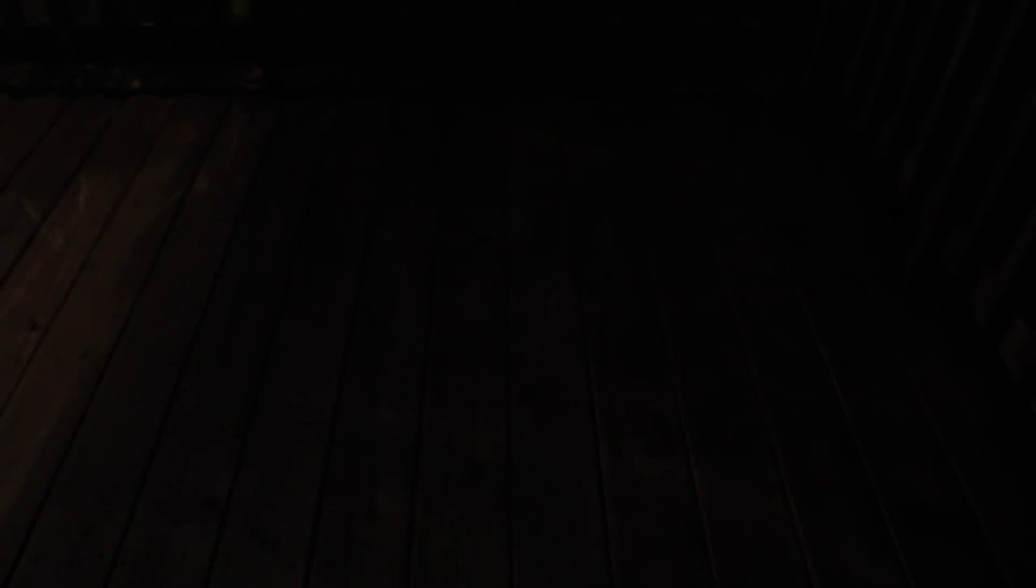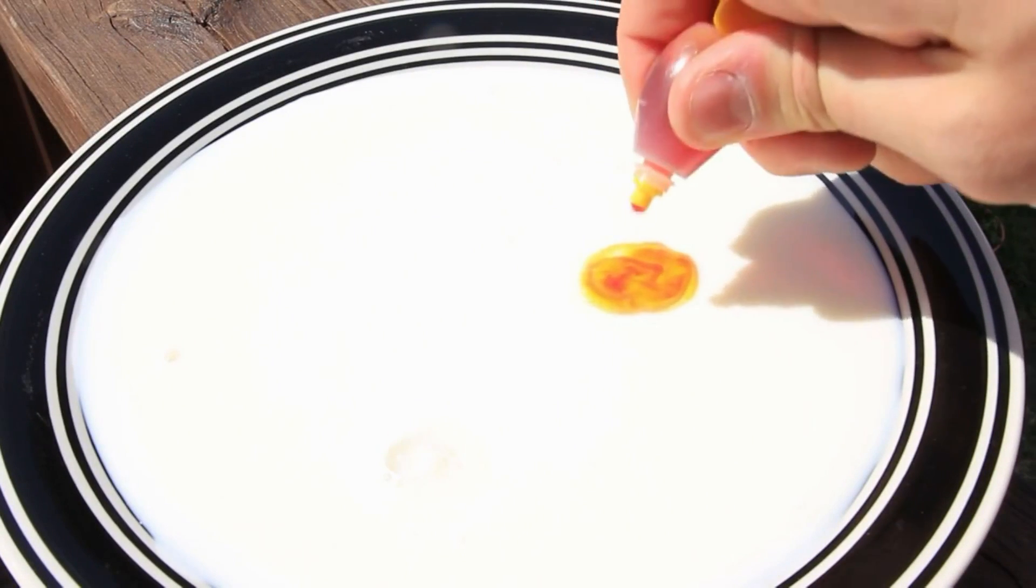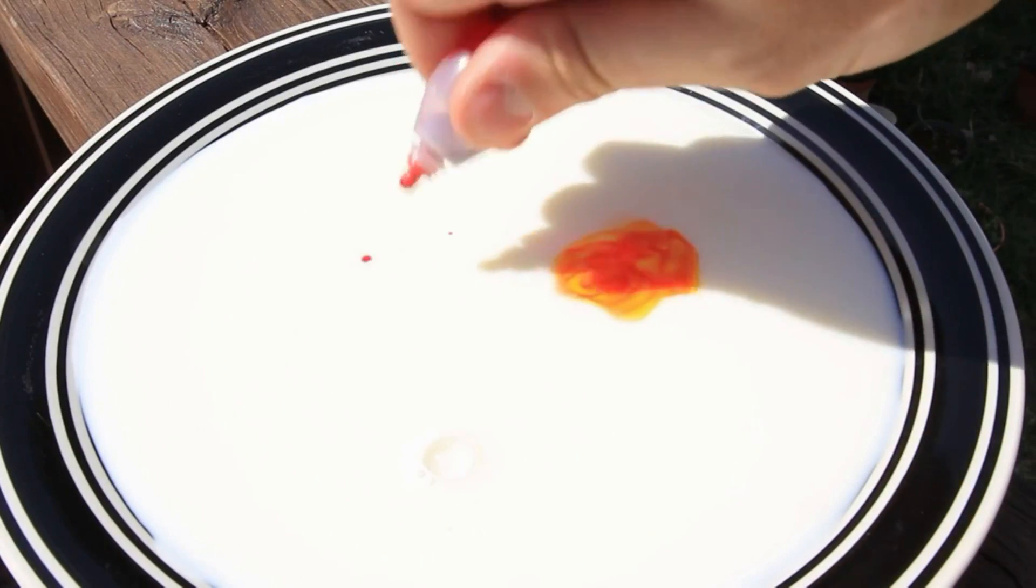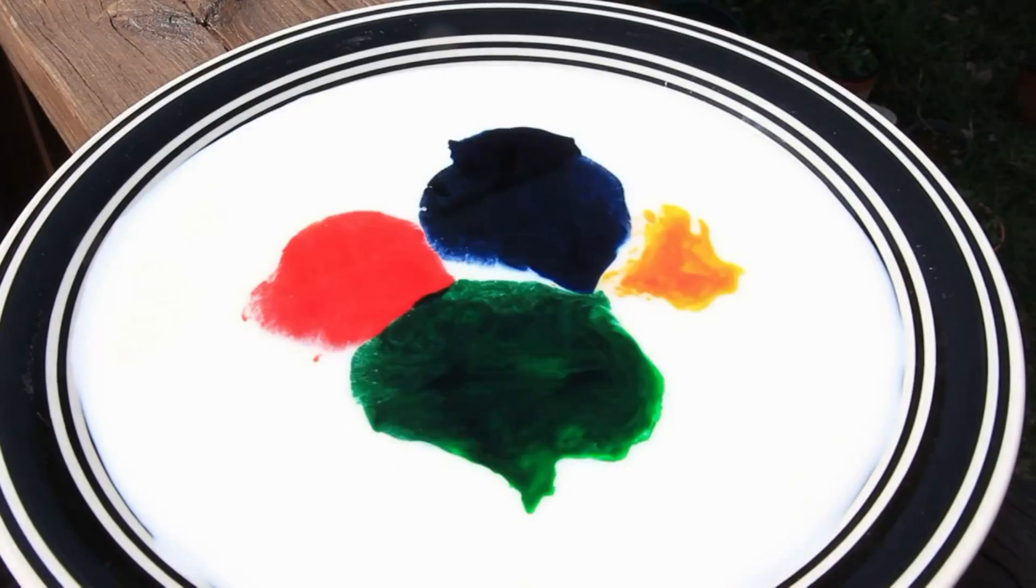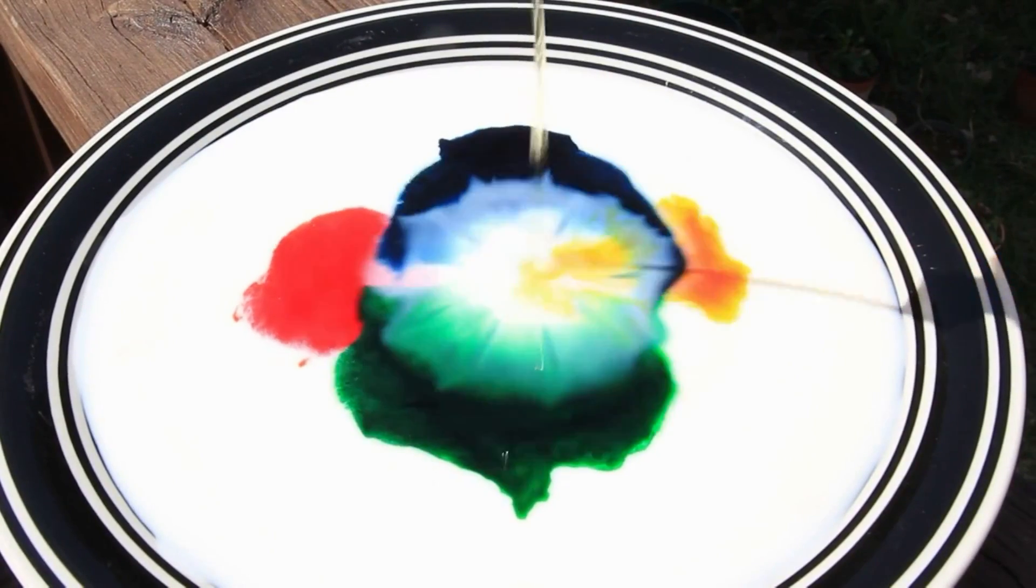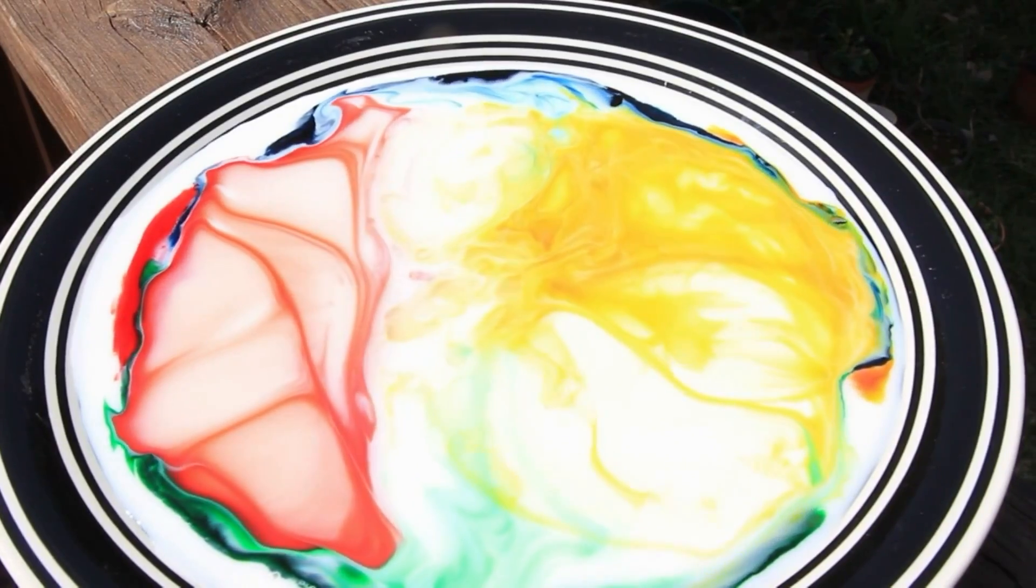I'm gonna add milk. Then we're gonna put food coloring. A few drops here, a few drops of red, and a few drops of blue and green. Just like that. Then we're gonna grab soap and... How cool is that, huh?